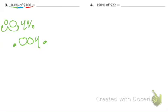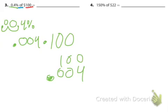Of is multiplication, and 100. So it's 0.004, that's a decimal, times 100.